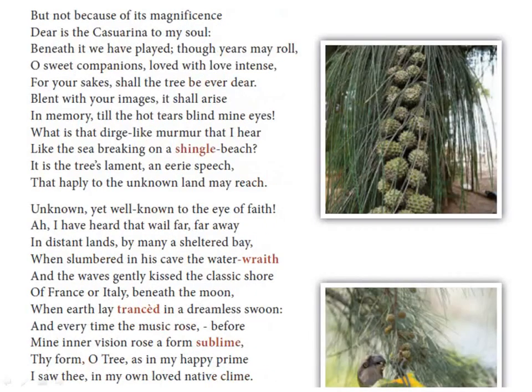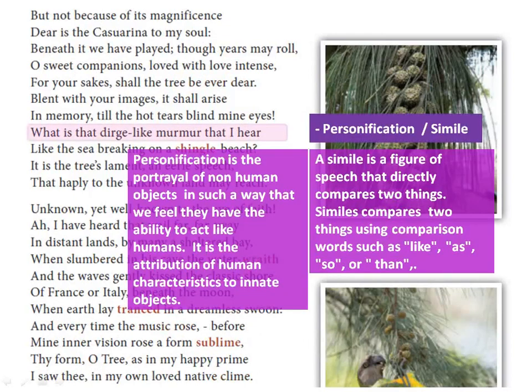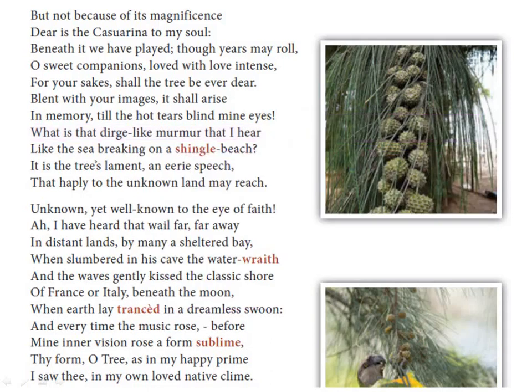'What is that dirge-like murmur that I hear?' — the tree is personified again here, singing its lament, which might be the wind rustling through the leaves. 'Dirge' means lament, and here simile is also used — the murmur is like a lament mourning the loss of the past. The line 'like the sea breaking on a shingle beach' again uses simile: the lament is like the sea waves hitting the rocky beach. 'Shingle' means rock.